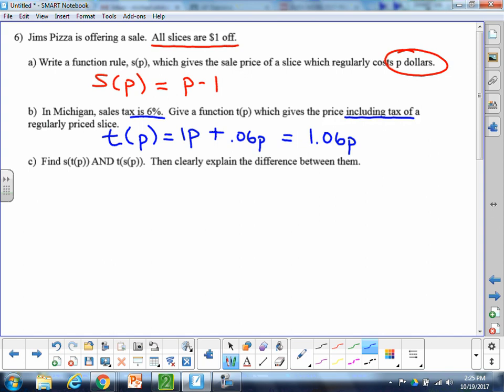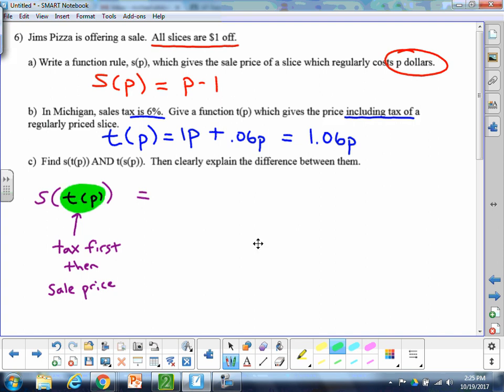Now in part C, we're starting to use both functions together. So let's do them in both orders. We have S of T of P. And again, remember, whatever is inside comes first. So that means we would be doing adding the tax first, then giving the sale price. And let's see what that works out to be. So S of T of P. So what we're going to do, again, is kind of start inside here. T of P is what we just wrote up here, right? So let's just replace that first. So I really need S of 1.06P. That was T of P.